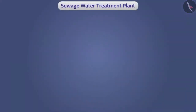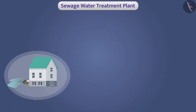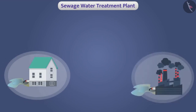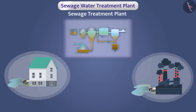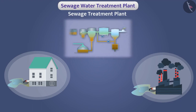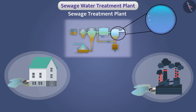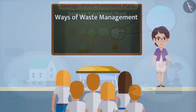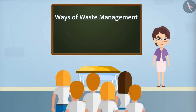It is necessary to treat domestic sewage and liquids released from industries with the help of a sewage treatment plant. This reduces the concentration of impurities in the water, thereby reducing water pollution. Now discuss with your teacher and find out more ways of waste management.